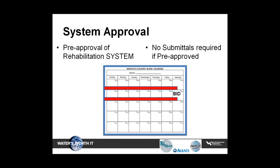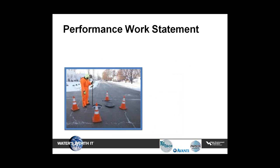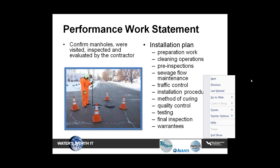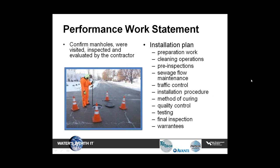One of the items in the specification is that the system manufacturer must submit to the owner, a minimum of 14 calendar days in advance of the bid date, all required product information to obtain pre-approval system status. The contractor shall submit a performance work statement at the pre-construction meeting. At a minimum, it shall contain: certification that designated manholes were visited, inspected, and evaluated by the contractor; a detailed installation plan describing all preparation work, cleaning operations, pre-inspections, bypass pumping, traffic control, installation procedures, method of curing, quality control, testing to be performed, final inspection, and warranties; a detailed installation schedule; and the contractor's experience for each type of rehabilitation component.